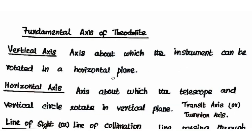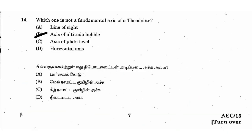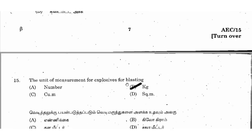For the fundamental adjustment of the theodolite, all the listed options — line of sight, axis of altitude bubble, axis of plate level, and horizontal axis — are fundamental axes. All are correct fundamental axes of the theodolite.